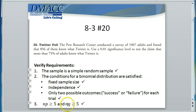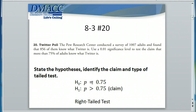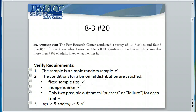The last requirement is that NP and NQ are both greater than or equal to 5. N is the sample size, 1,007. The population proportion of adults that know what Twitter is — we're assuming it's 75%, because the null hypothesis is what we assume to be true throughout our entire test. If we multiply 1,007 by 75%, we get something greater than or equal to 5. And 1,007 times 25% (the complement of 75%), NQ, would also be greater than or equal to 5.